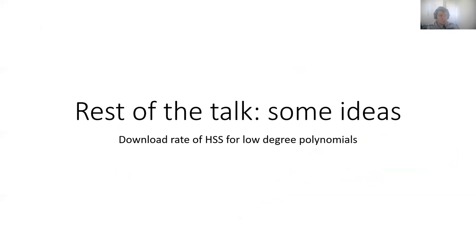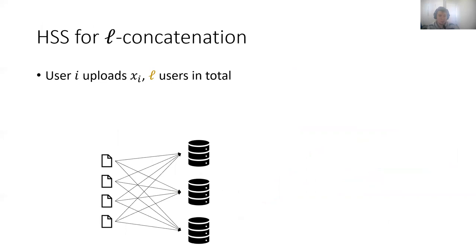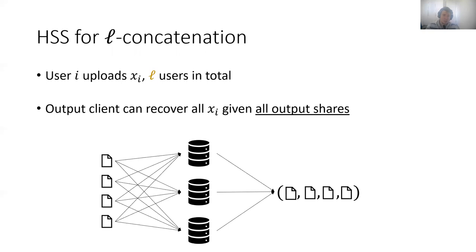In the rest of the talk, I'll discuss some ideas regarding the download rate of HSS for low-degree polynomials. Consider the problem of HSS for L concatenation. Here we have L users and each user has some data X_i, which is shared among the servers. The task is to have the output client recover all the inputs given all the output shares. With T privacy, we want a T-collusion of servers to not learn anything about the inputs.